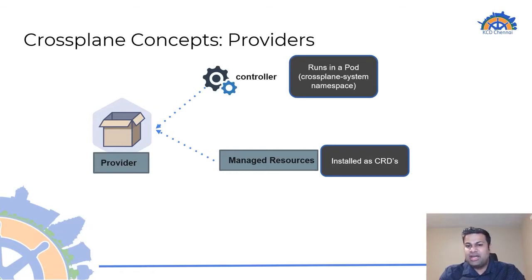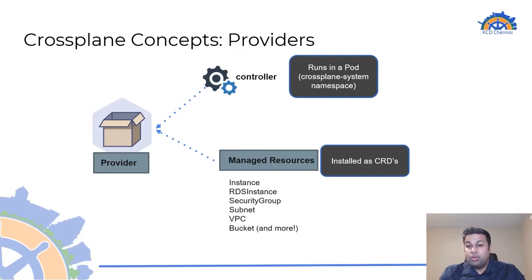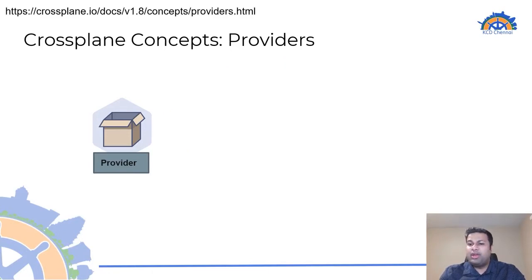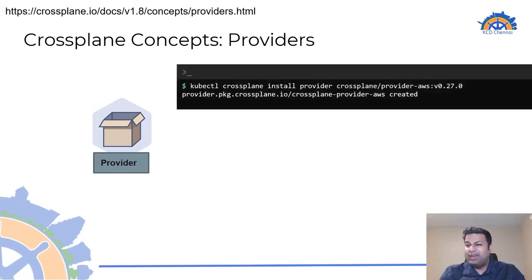The managed resources are the fundamental building blocks in Crossplane that have a one-to-one mapping with a resource in the external system. For example, with the AWS provider, Crossplane installs CRDs for resources such as Instance, RDS Instance, Security Group, Subnet, VPC, and Bucket — each corresponding to the actual service within AWS. The corresponding provider must be installed on the Kubernetes cluster before provisioning resources on that platform. This can be done by running a one-line kubectl command, provided the Crossplane CLI plugin is already installed. In this case, we are installing the AWS provider version 0.27.0.